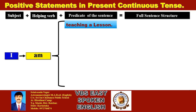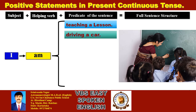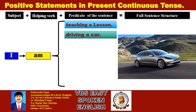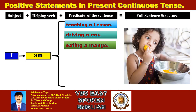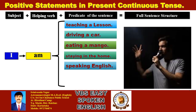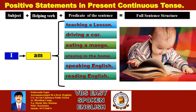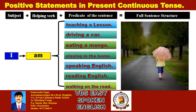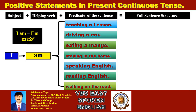In present continuous tense we add ING: teach plus ING equals teaching. Drive plus ING equals driving. Eat plus ING equals eating. Stay plus ING equals staying. Speak plus ING equals speaking. Read plus ING equals reading. Walk plus ING equals walking. Here, 'I am' is the short form of 'I am'.